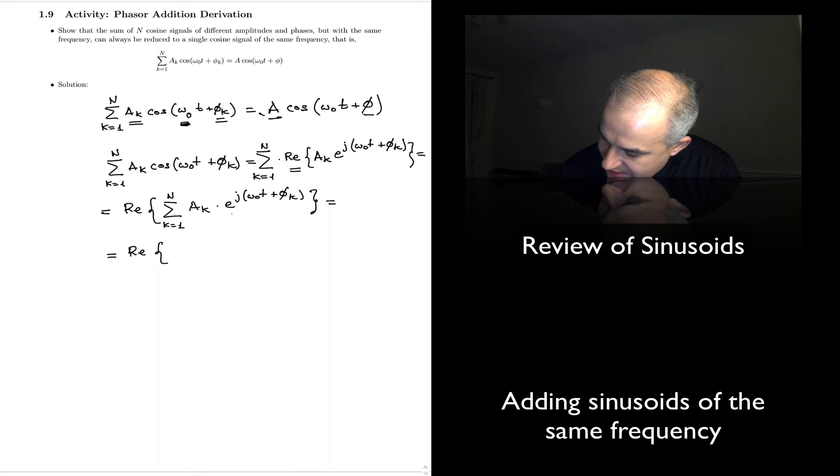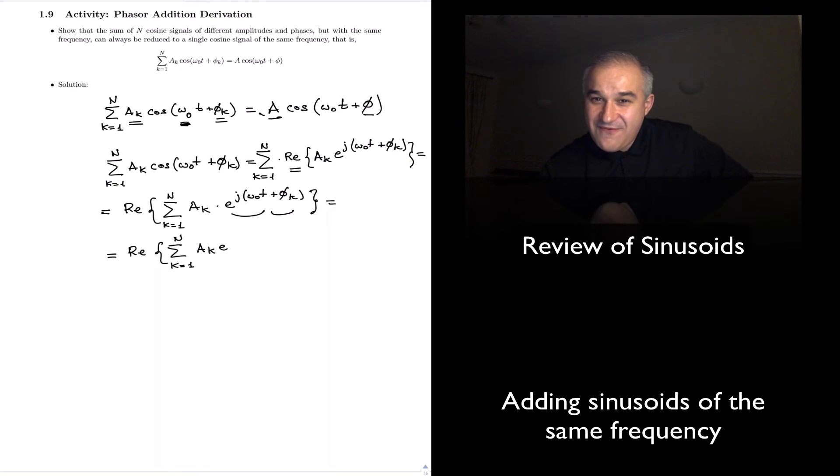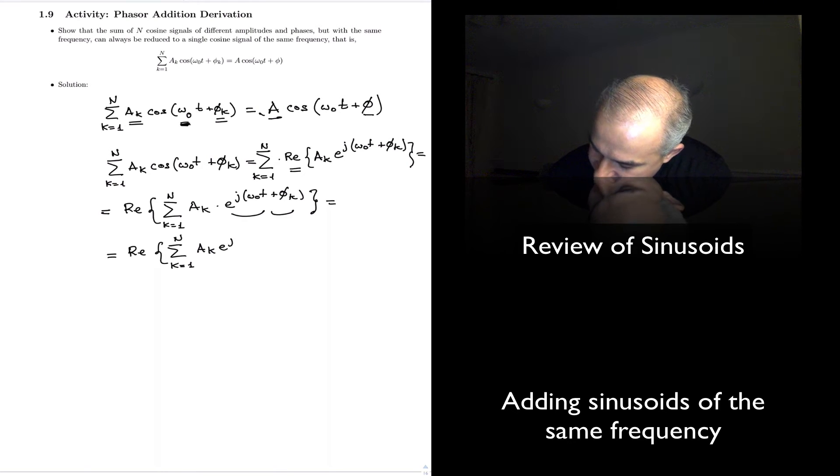Real. And now, this is a critical step, is what I'm going to separate, using the properties of the exponential function, A_k e and I'm going to bring the phase out, so really what I have here is a phasor. Notice, this is A_k e to the phase, and then I have another component that does not depend on the summatory. This is key.